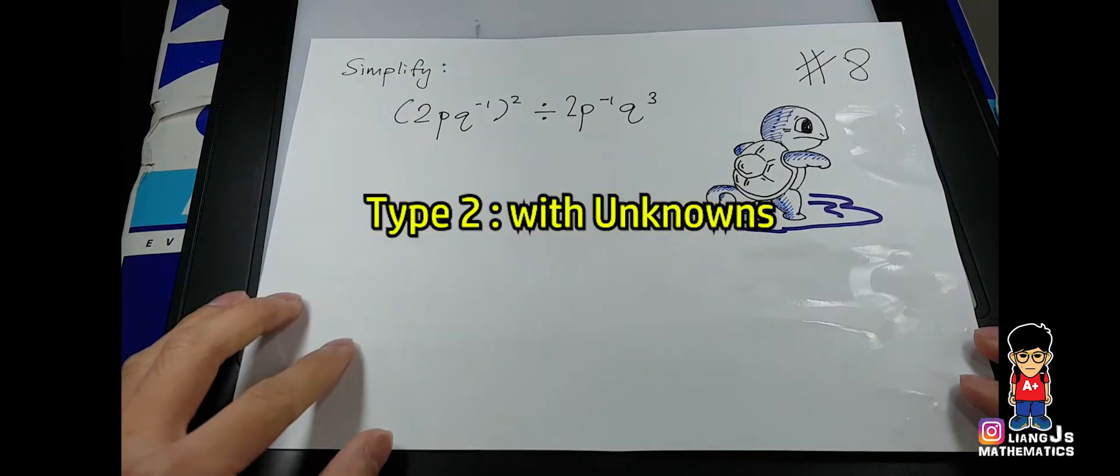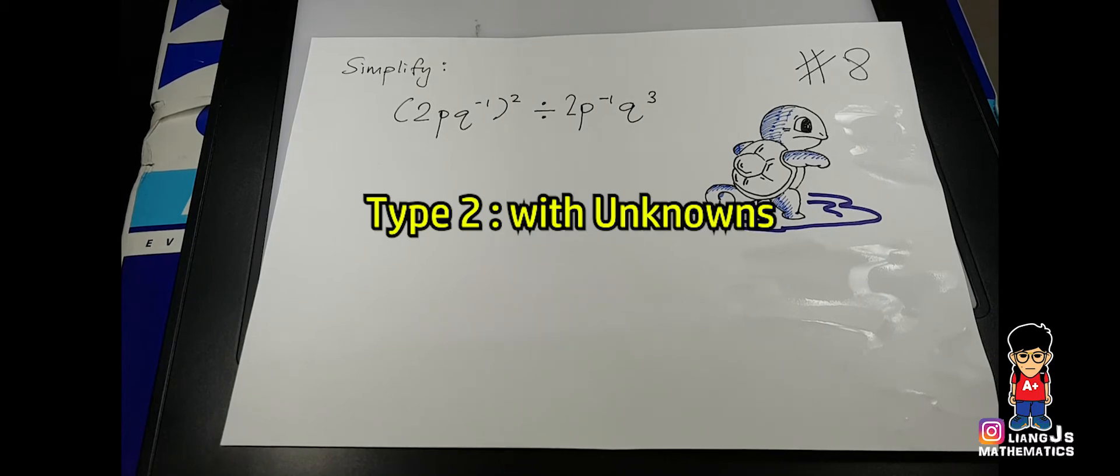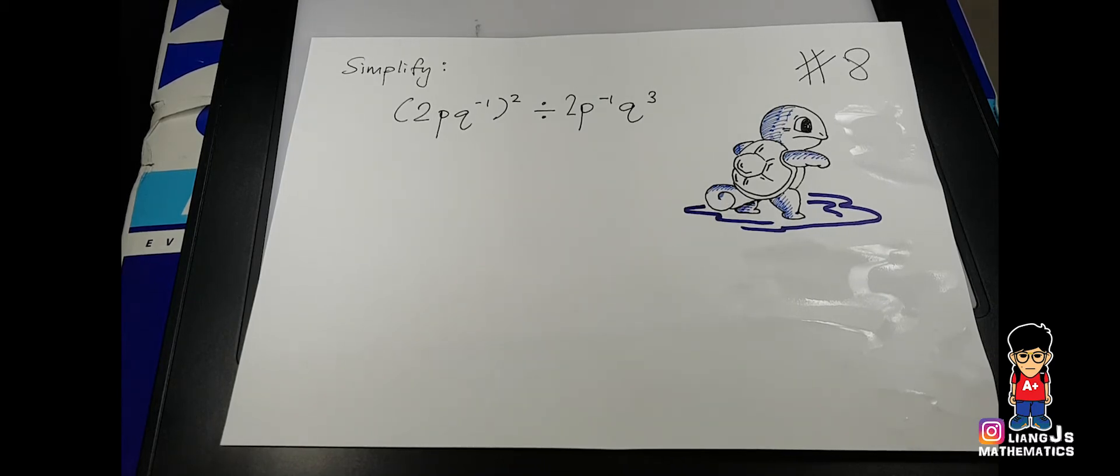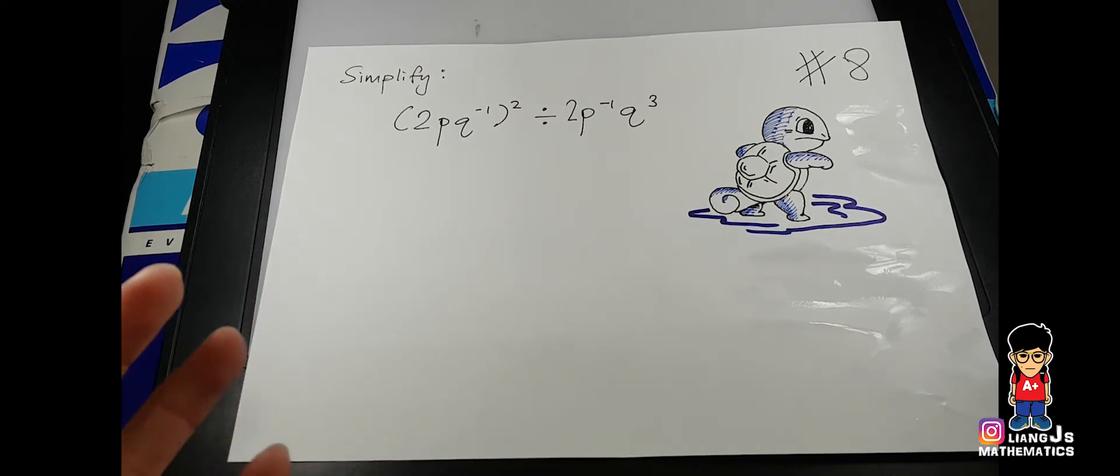Hi guys, I'm Liang Jie. In this case what we have here is indices again, and these indices, what you can see, it's about unknowns and some numbers combined together. Sometimes you might mix this up with algebraic expression, but it's okay.